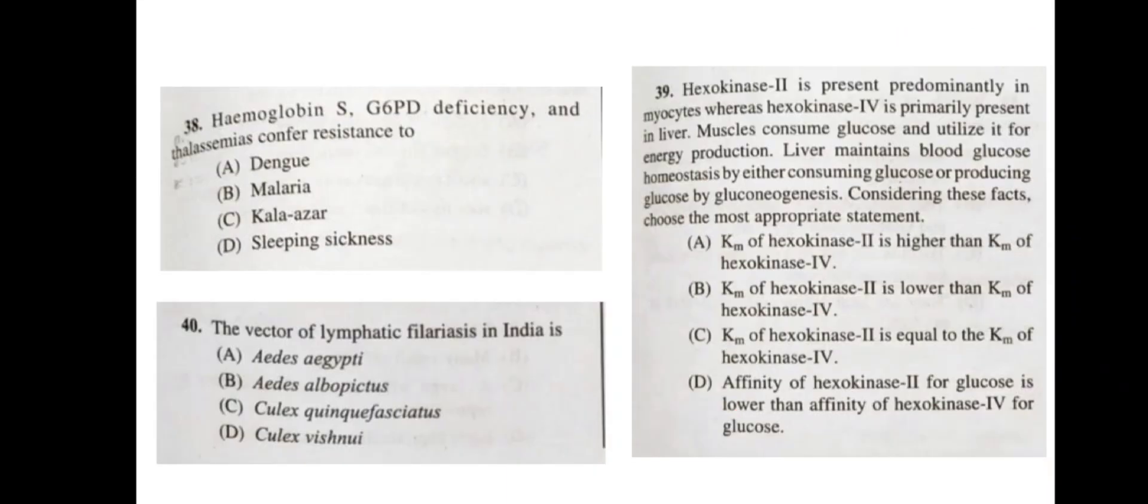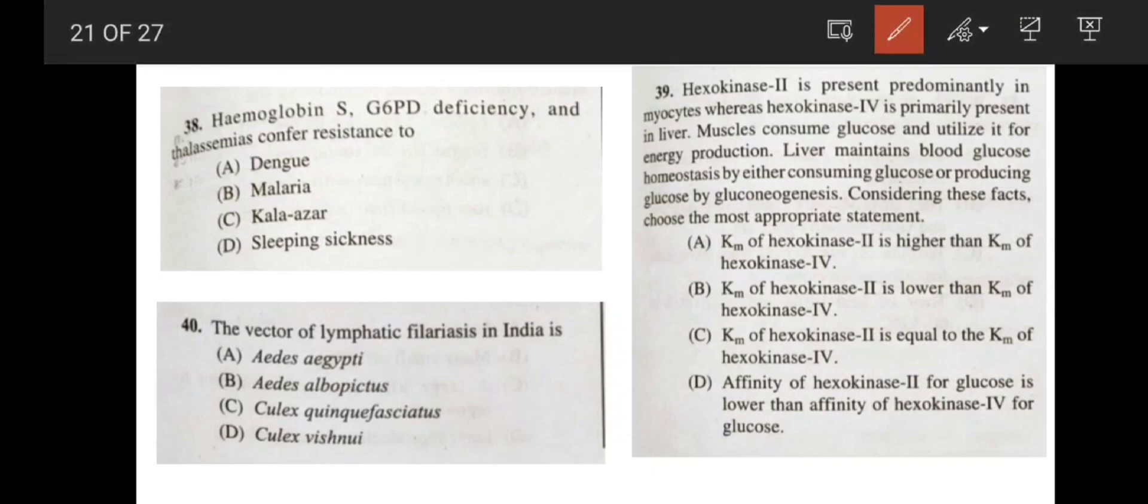Now, coming to the question number 38. Hemoglobin S and G6PD deficiency and thalassemias confer resistance to malaria. Now, coming to the question number 40. A vector of lymphatic filariasis in India is option C, Culex quinquefasciatus.